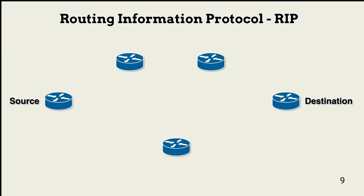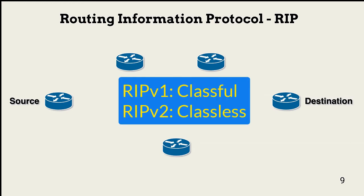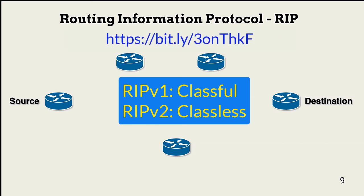There's a variation on how different RIP versions work. RIP v1 is a classful routing protocol, and RIP v2 is classless.